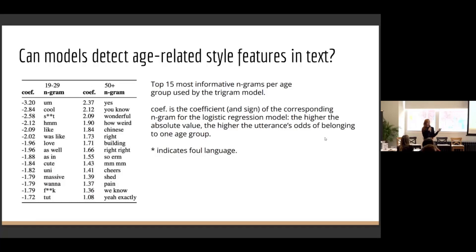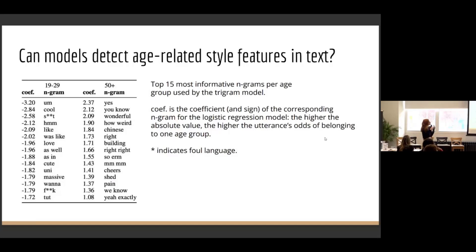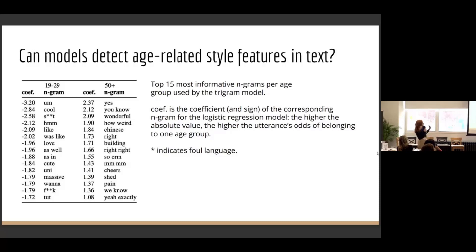We did some analysis on the predictive features of these models, which can give us an idea about what different vocabulary different speakers use. In the psychology literature, it's been found that there are some key properties that correlate with different age groups in terms of the language they use. Maybe older speakers are more likely to be more polite or use more positive sentiment, while younger speakers are more likely to use more expressive language. We find this in our data as well. This raises the question that you don't necessarily want your model generating inappropriate content when training it to generate more specifically for different age groups, so we removed those from our training data.